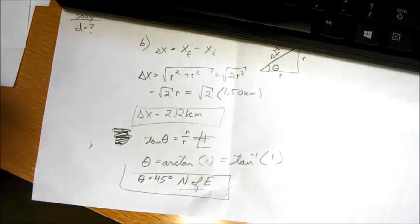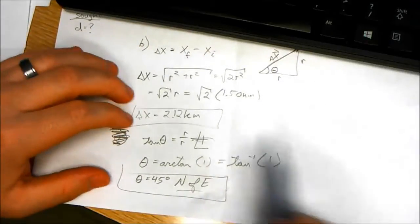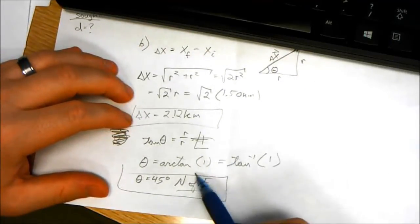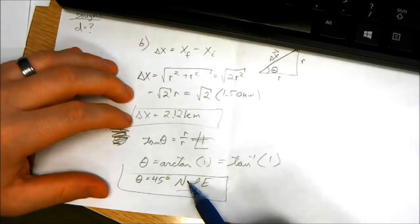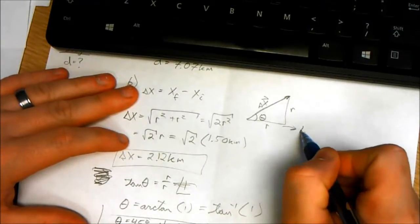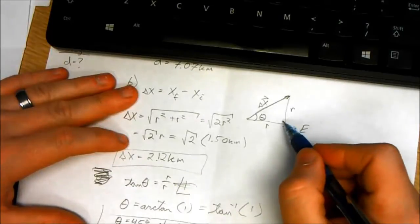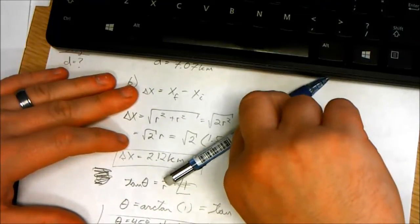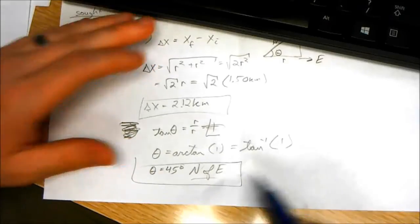Alright, I had some technical difficulties, the video cut out. But when you find the arc tangent of 1, you get 45 degrees, and that's 45 degrees north of east. So remember, this is the easterly direction, so this is 45 degrees north of east. It's important that you put that last part in there.